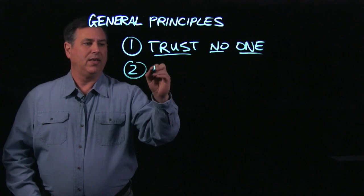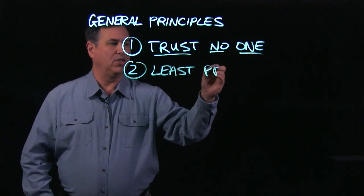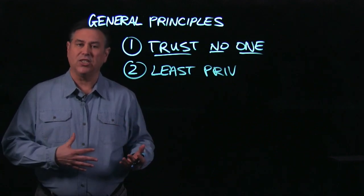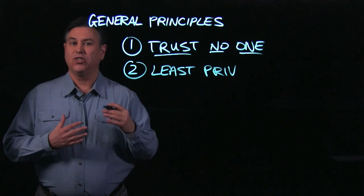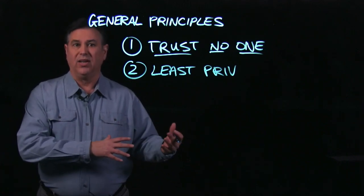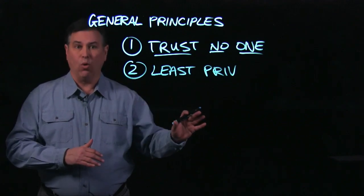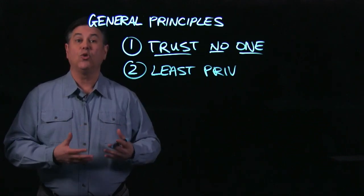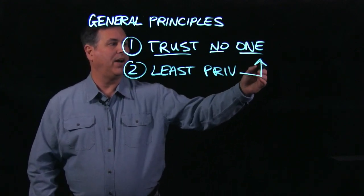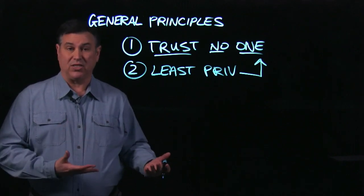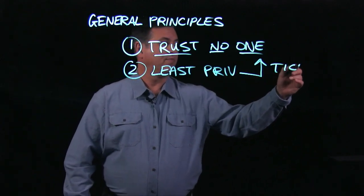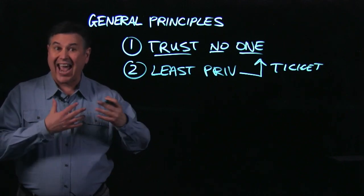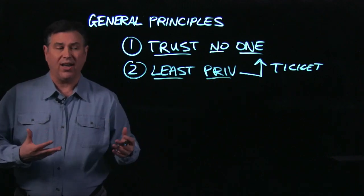The second principle is also extremely important, and this is the least privilege principle. This is making sure that your subjects, users, systems, and applications only have the access and authorization to do things to the objects they come in contact with that they need to do their job or accomplish their tasks — no more. If you have to escalate privileges for a user, that needs to be done through some type of configuration management system, through a ticket-based process or service desk — on an as-needed basis to escalate privileges.